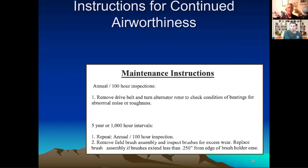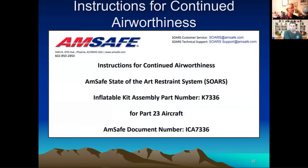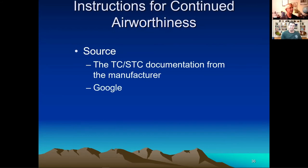At the extreme end: AmSafe makes a state-of-the-art inflatable seat belt restraint system, and their instructions for continued airworthiness document is 100 pages long — for a seat belt. That's probably half the cost of the seat belt just in publishing the ICA. The ICA essentially becomes an addendum or appendix to your annual inspection checklist on your airplane, in a binder provided to the IA conducting your inspections. These are required.